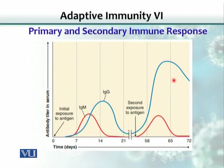This is a typical primary and secondary immune response profile. Primary immune response is always low, but secondary immune response is always high.